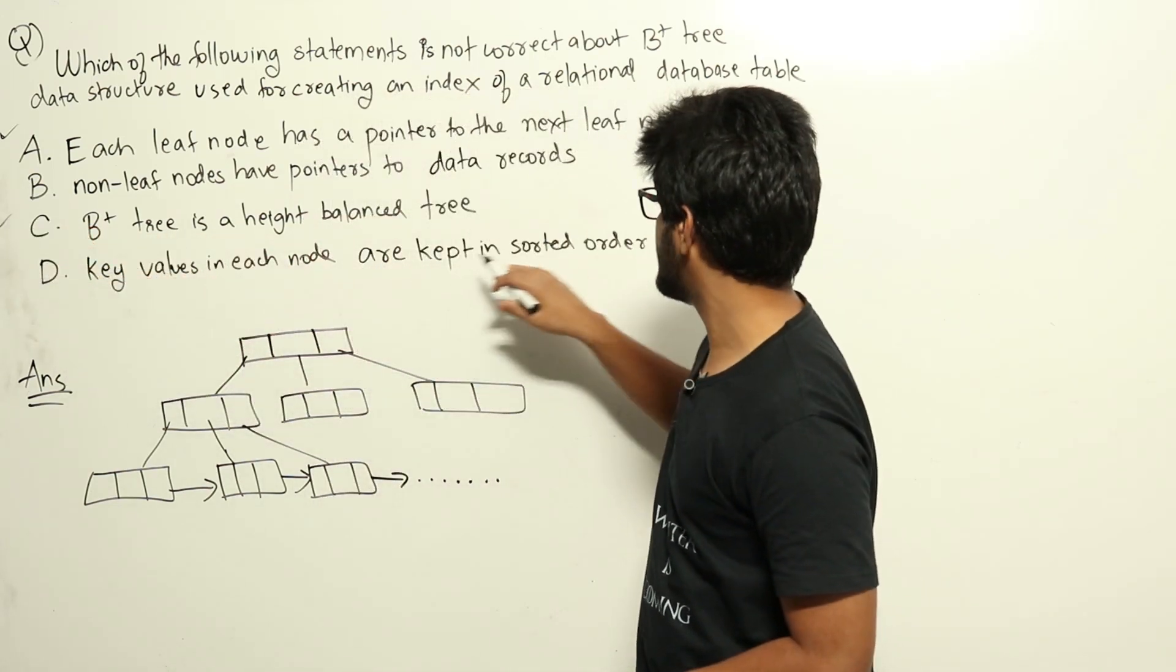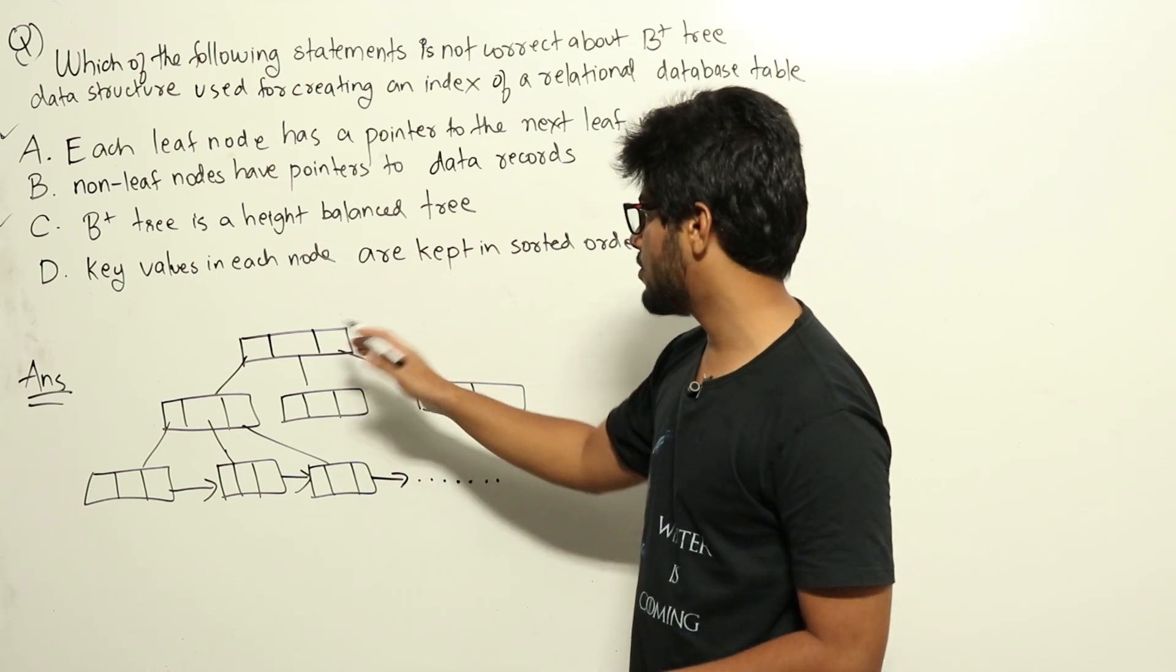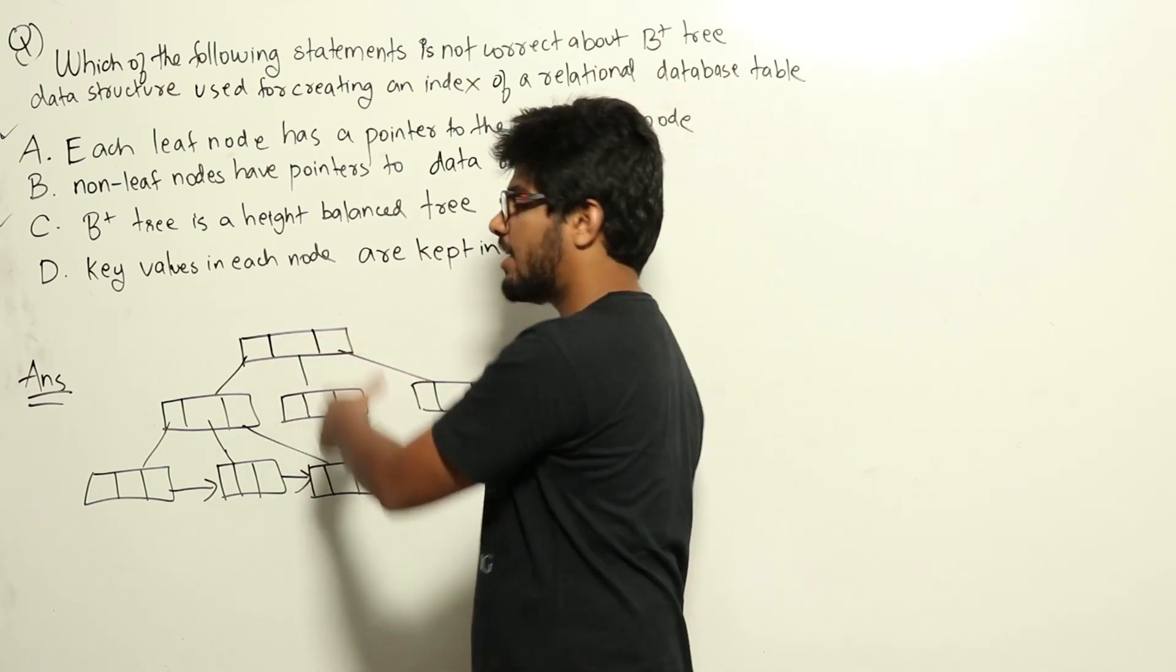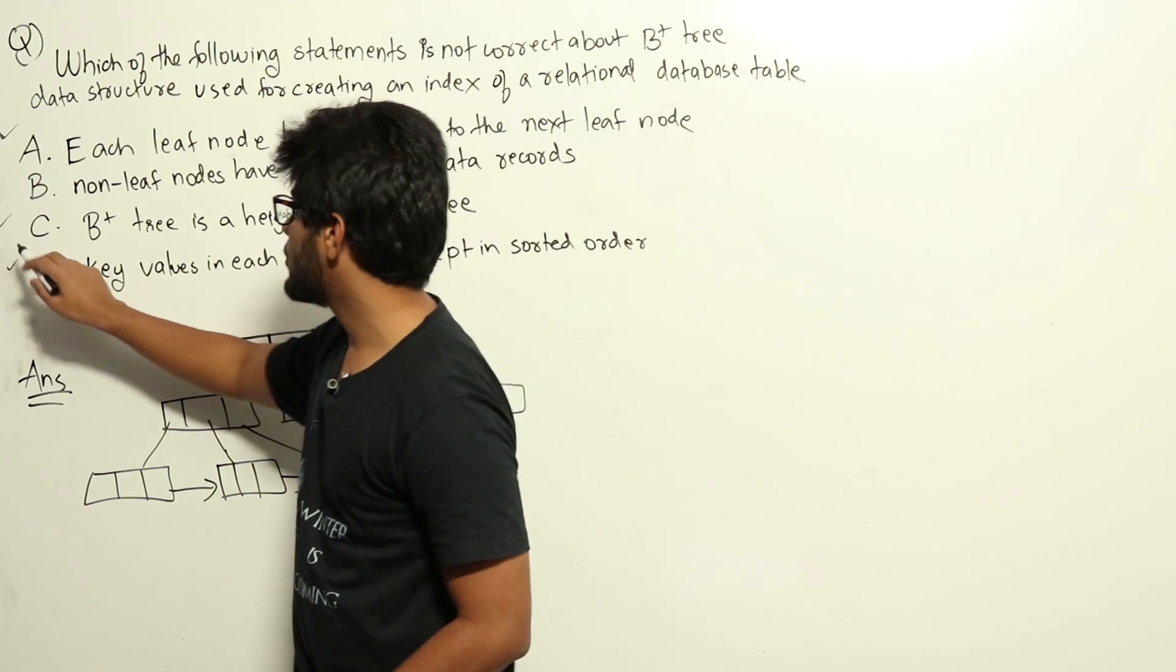Option D, key values in each node are kept in sorted order. That is also true. For searching, we have to keep the key values in a sorted order in each node. D is also true.